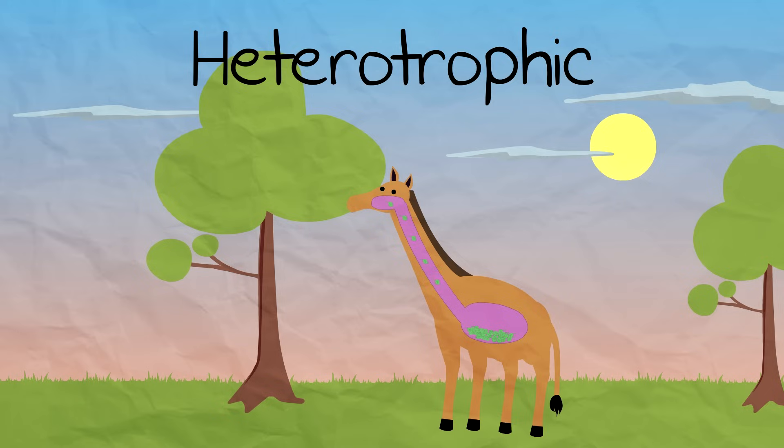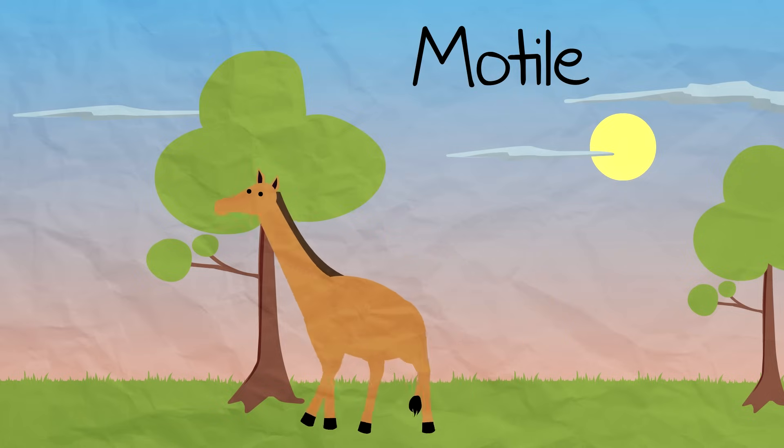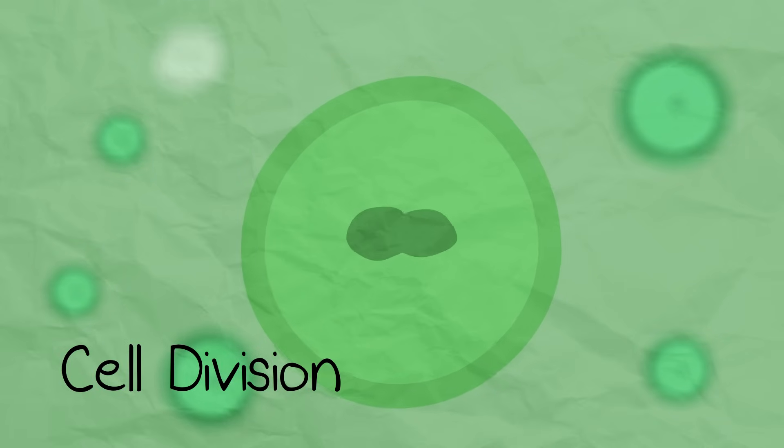They are heterotrophic, which means they eat stuff and have a digestive system. They are motile, which means they move. Cell division, which enables growth, happens in the tissue.